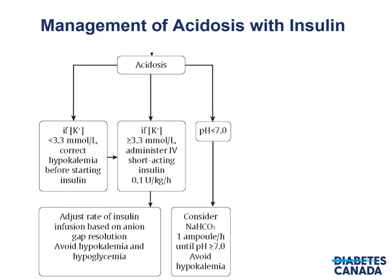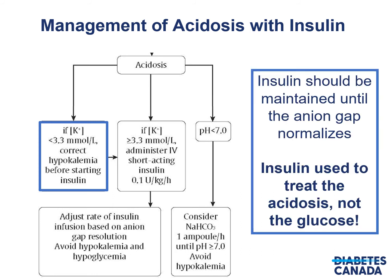The third pillar is managing acidosis with insulin. If the patient's potassium is greater than 3.3 millimoles per liter, administer IV short-acting insulin at 0.1 units per kg per hour and adjust the rate based on anion gap resolution. It's critical to avoid hypokalemia and hypoglycemia. If the pH is less than 7, consider bicarbonate administration — one ampoule per hour — until the pH is greater than 7. Note that both bicarbonate and insulin can shift potassium into cells, lowering plasma potassium. If potassium is less than 3.3, correct hypokalemia before starting insulin. Intravenous insulin should be maintained until the anion gap normalizes. Remember: insulin is used to treat acidosis, not hyperglycemia.